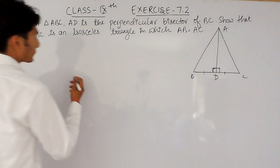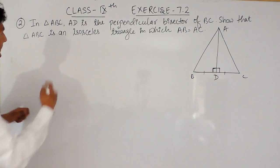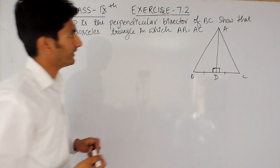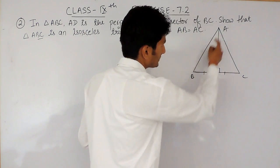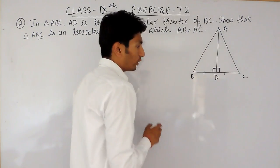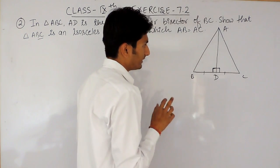So here, we have to prove that triangle ABC is an isosceles triangle where AB equals AC. We have to prove that this AB equals AC. Now, if you have to prove that this side and this side are equal, in that case,